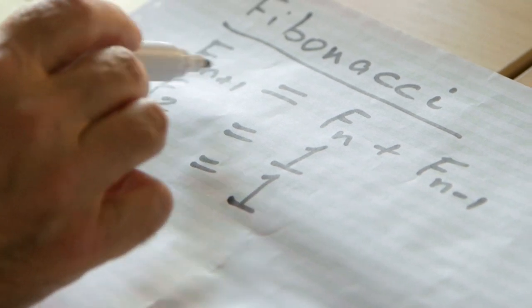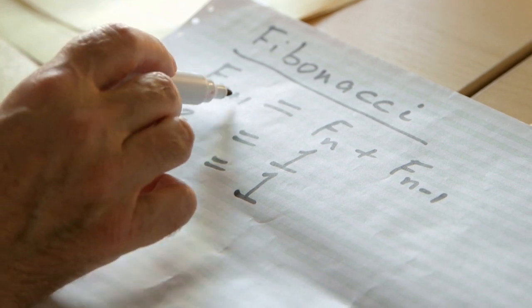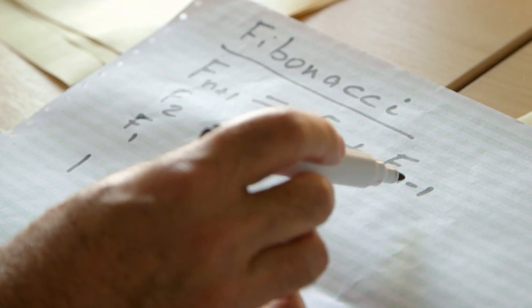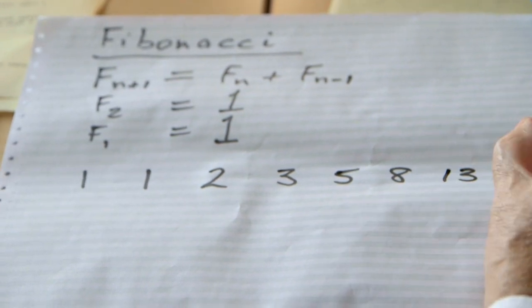We can now write down the Fibonacci sequence. It starts with 1 for the first number, 1 for the second. If I want F3, I make n be 2: Fibonacci of 3 is Fibonacci of 2 plus Fibonacci of 1, both 1, so F3 is 2. Every Fibonacci number is the sum of the two that immediately precede it. So the next one is 2 plus 1 = 3, then 3 plus 2 = 5, 8, 13, 21.